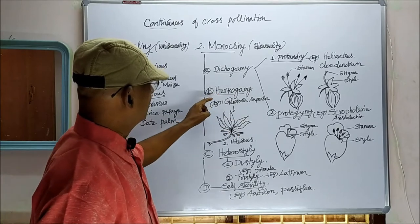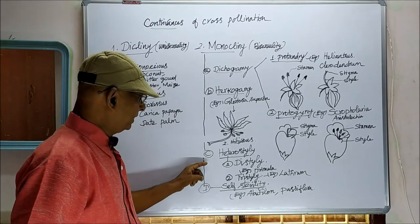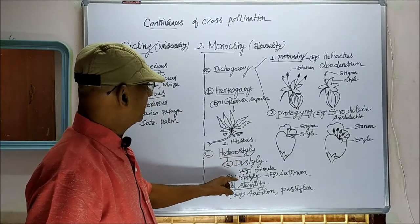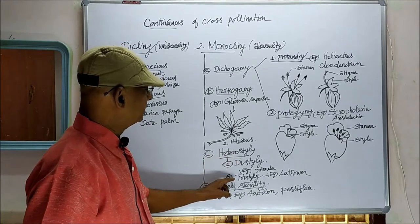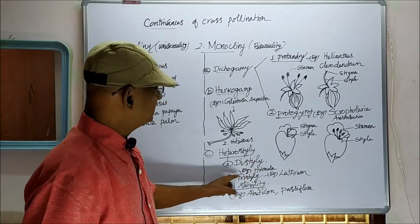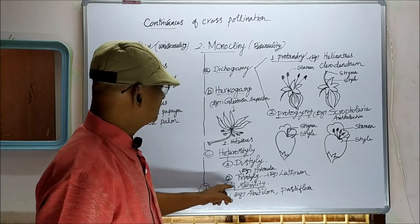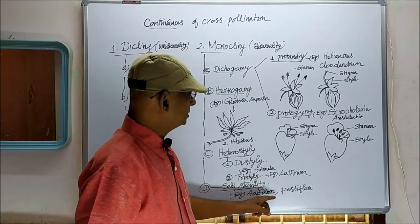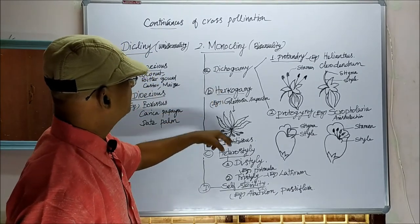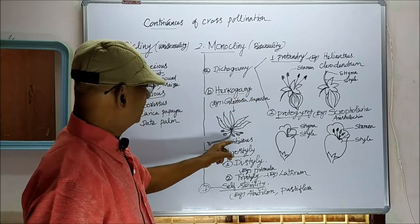Herkogamy is not further subdivided. Heterostyly is subdivided into distyly and tristyly. Distyly example: Primula. Tristyly example: Lythrum. Self-sterility is exhibited by Abutilon and Passiflora. For herkogamy, two examples given: Gloriosa superba and Hibiscus.